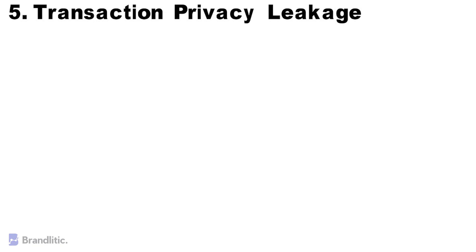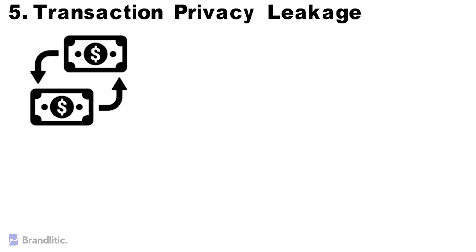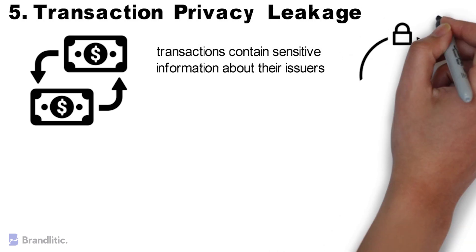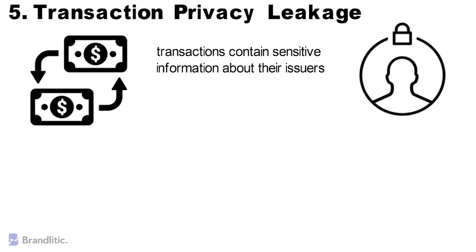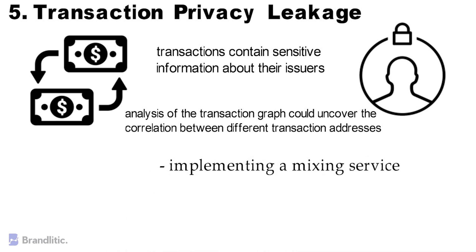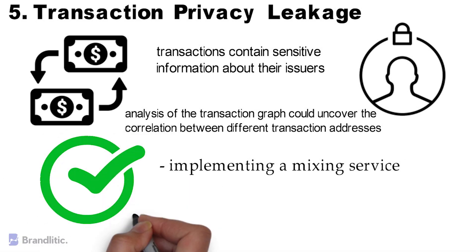Number five: transaction privacy leakage. In public blockchain networks, transactions are open, transparent, and traceable. While this keeps information synchronized and allows consensus among distributed nodes, there are privacy risks when transactions contain sensitive information. In applications such as the Internet of Things or mobile crowdsourcing, privacy leakage can cause critical issues. Analysis of the transaction graph could uncover correlations between different transaction addresses, potentially revealing users' identities. A popular solution is implementing a mixing service, which allows multiple users to make transactions simultaneously with multiple inputs and outputs, so transaction inputs cannot be mapped to their corresponding outputs.